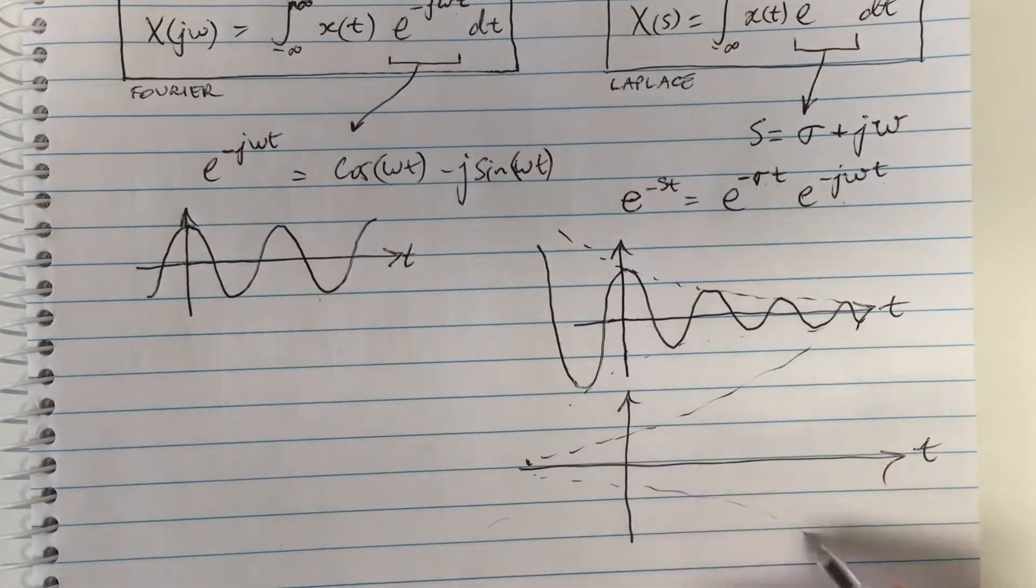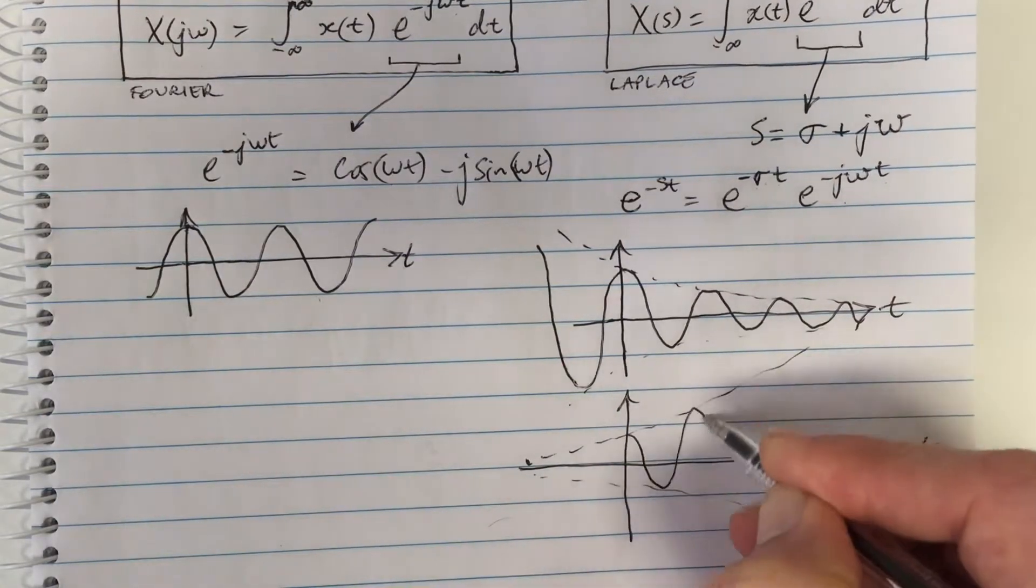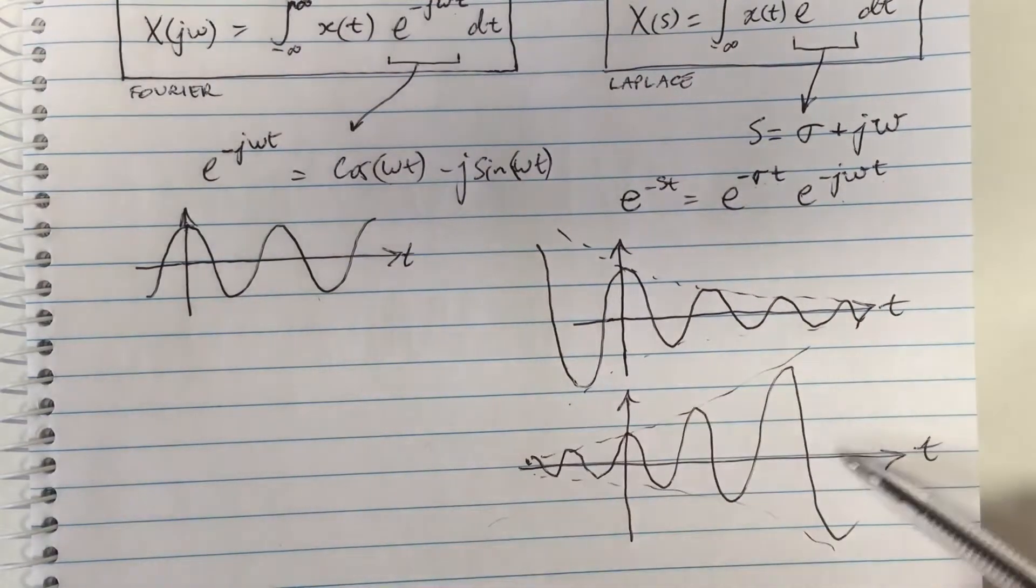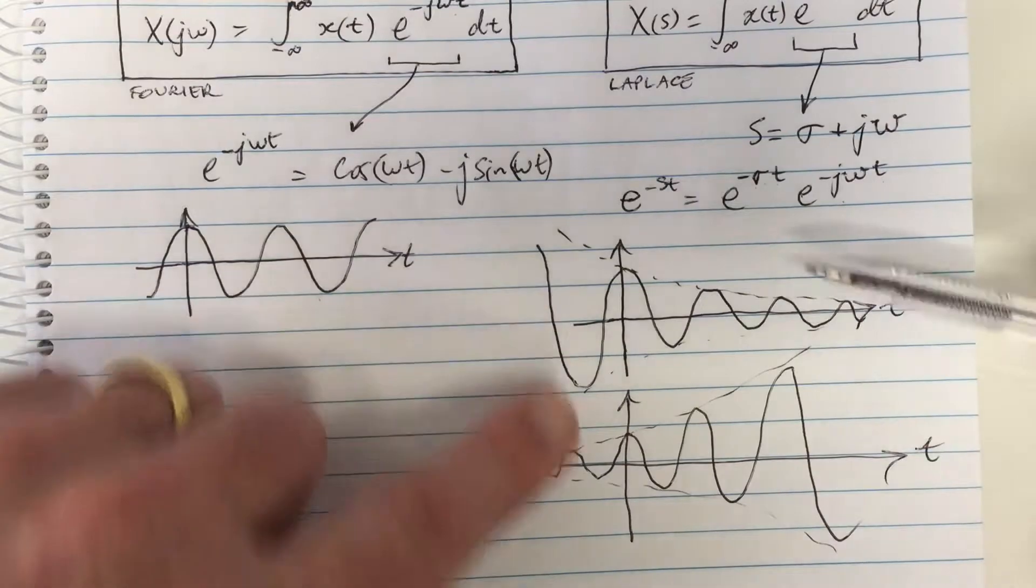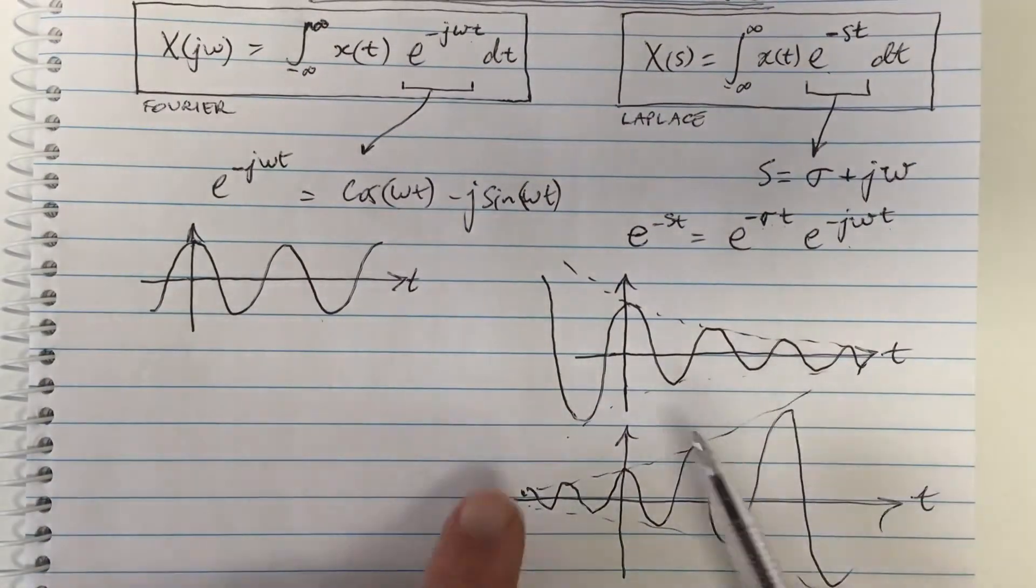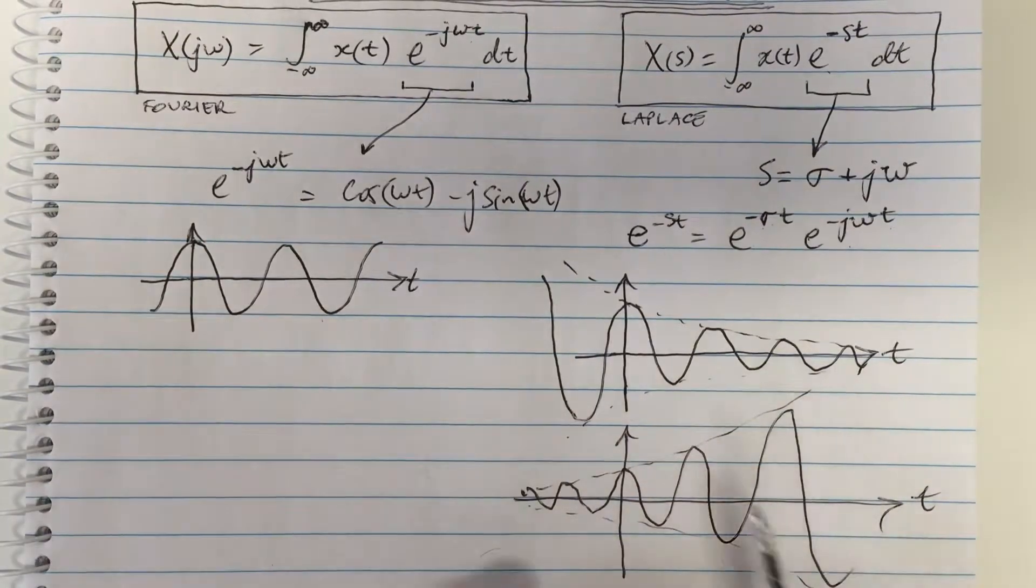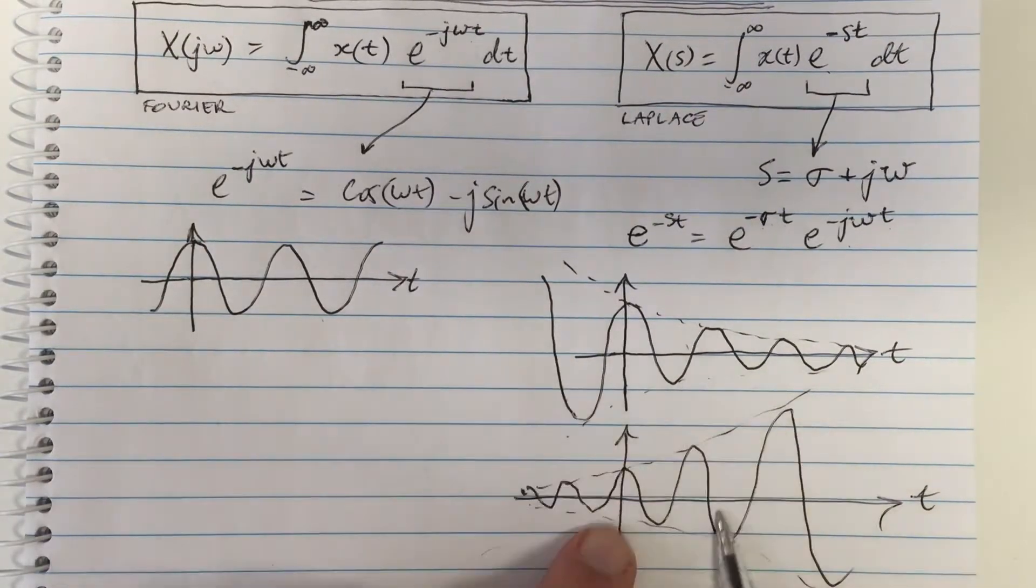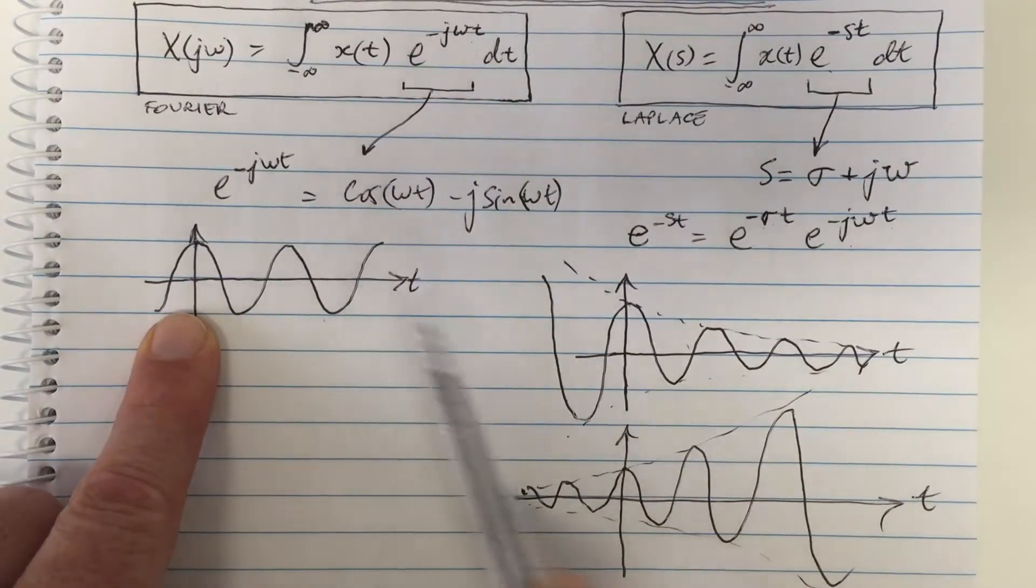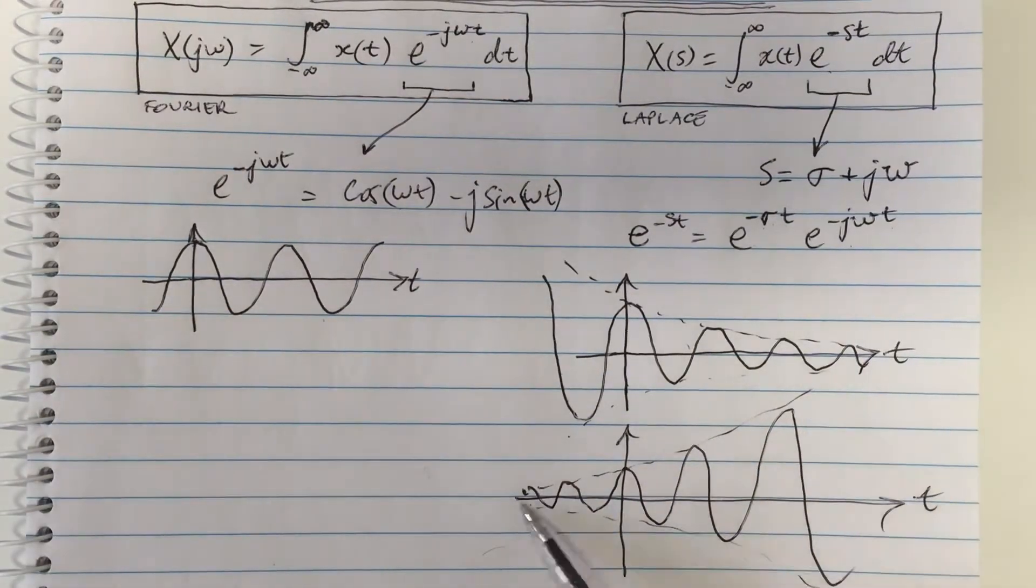These will be basis functions that look like this where the functions are getting bigger with time. So now our Laplace transform is going to be made up of signals—all of the signals you can generate by adding these kinds of basis functions. This is a more general class than the Fourier transform, and this allows for signals which are unstable.